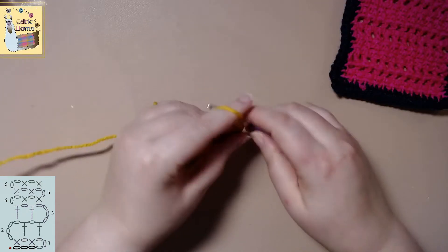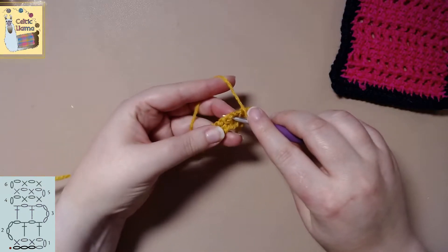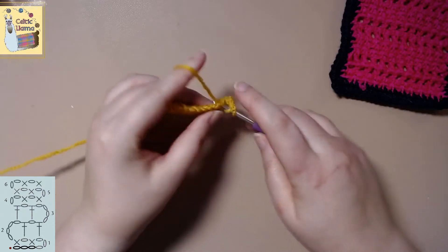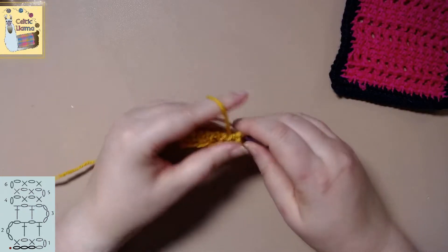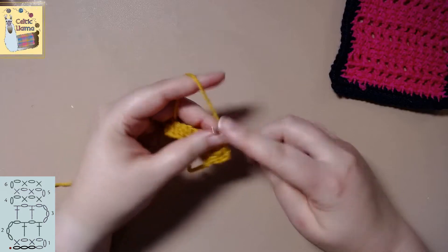Followed by a chain one. And you will double crochet in the next chain one space. And we will repeat this to the end of the row.